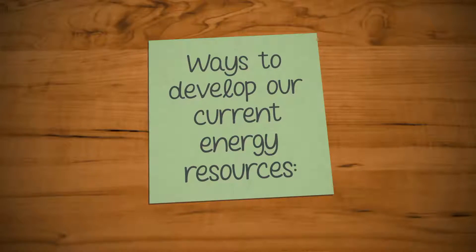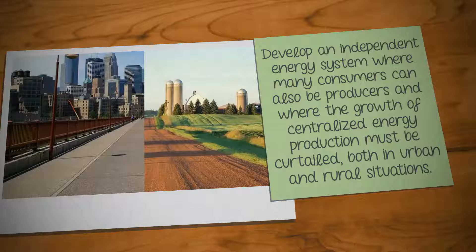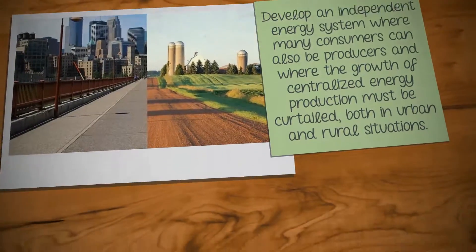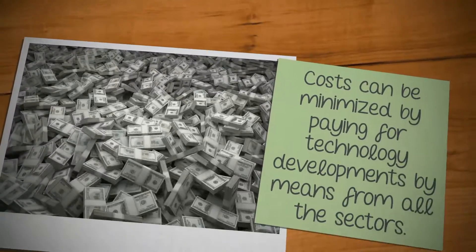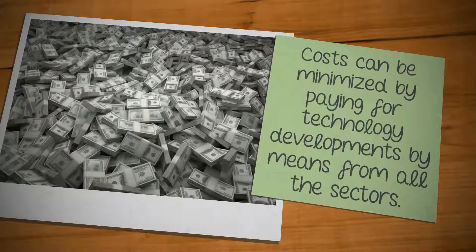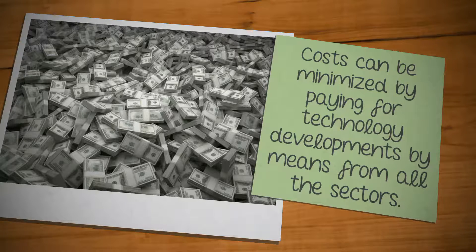What are the ways to develop our current energy resources? First, develop an independent energy system where many consumers can also be producers and where the growth of centralized energy production must be curtailed both in urban and rural situations. Second, the energy system could be made independent or regulated in a way that no single actor will be in control of pricing, good priority, or future strategic decisions. Costs can be minimized by paying for technology developments by means from all the sectors.